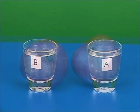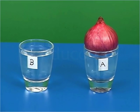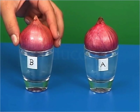Now take two onion bulbs of the same size and place one in each tumbler such that only the lower surface of the bulb is in contact with the water.